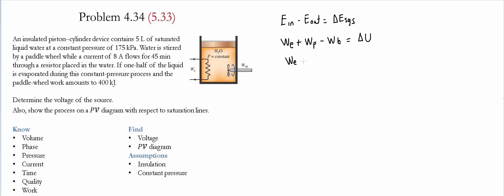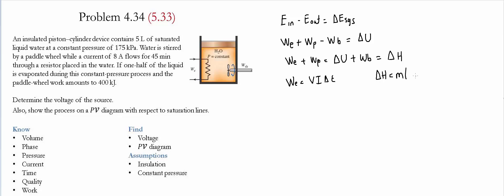We rearrange the equation by moving the boundary work to the other side, which converts the internal energy change plus boundary work into a change of enthalpy. The electrical work is simply the voltage times the current times the change in time. The paddle wheel work is provided, and the change in enthalpy is the mass times the difference of specific enthalpies H2 and H1.